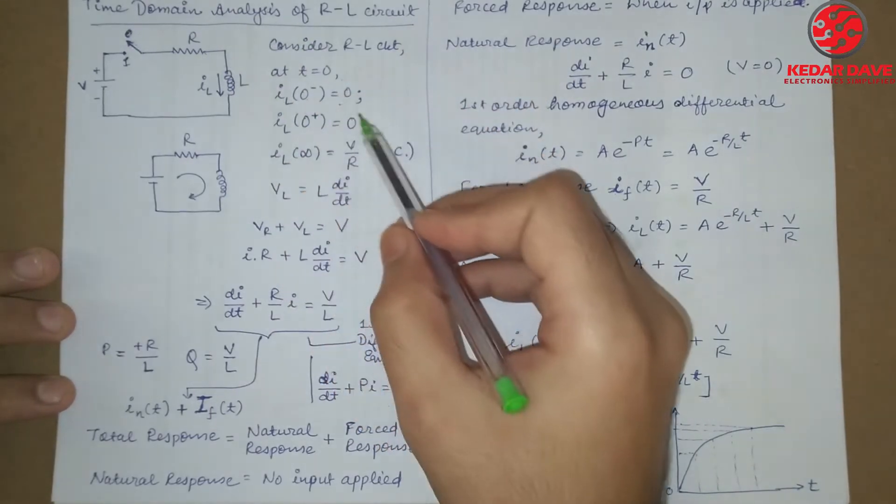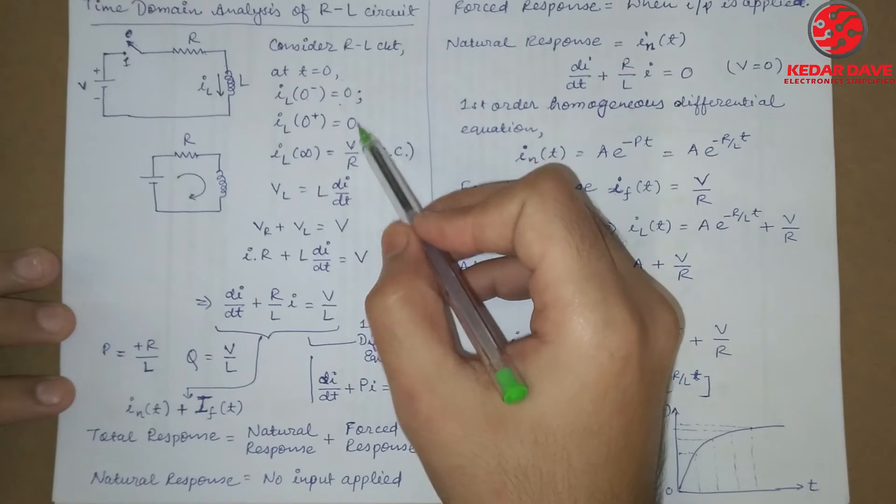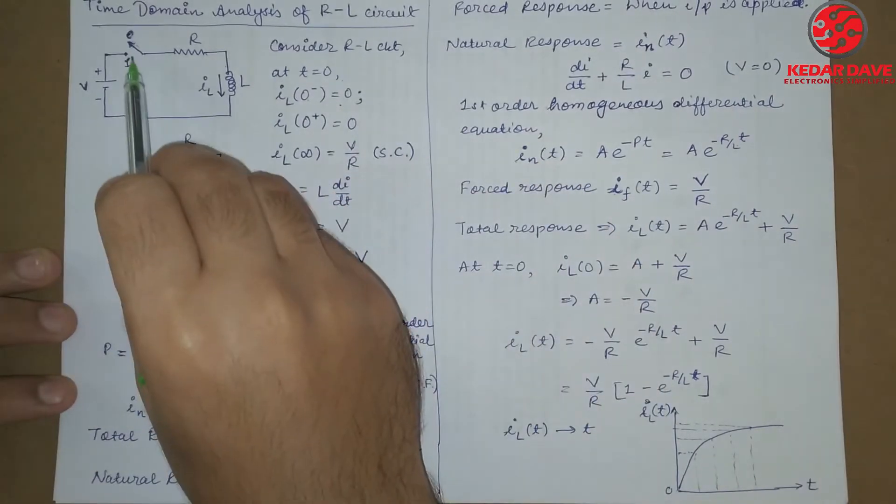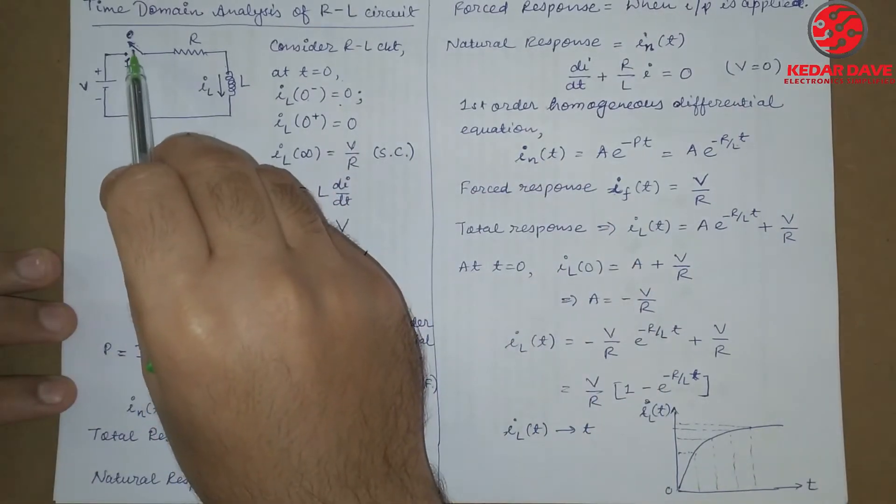So here we have seen these two things: in the starting, when our switch was open, the current through the inductor is zero at t equals zero.